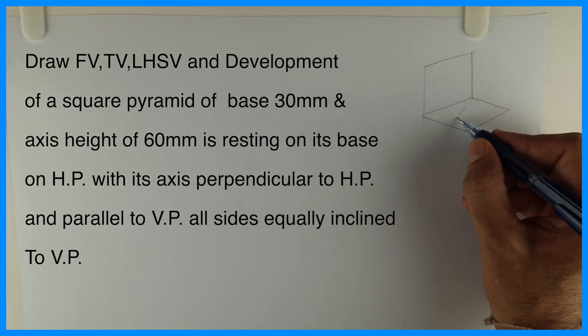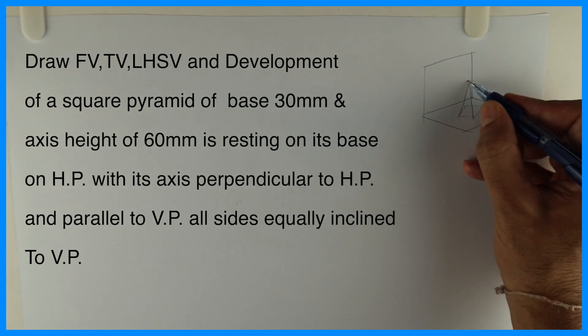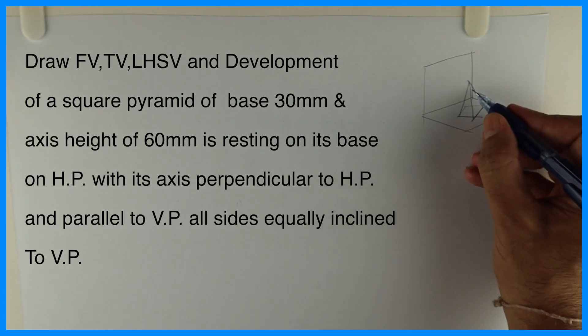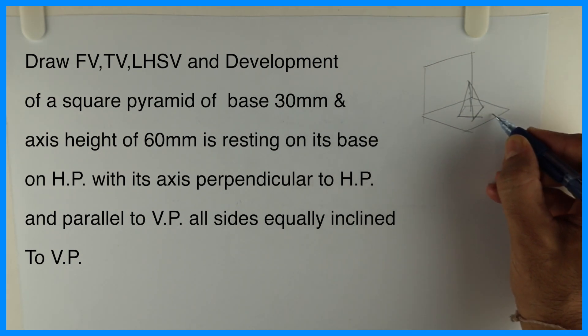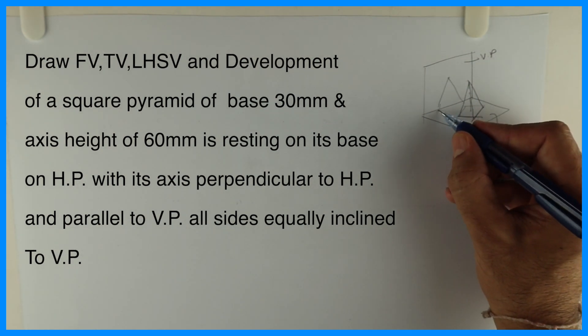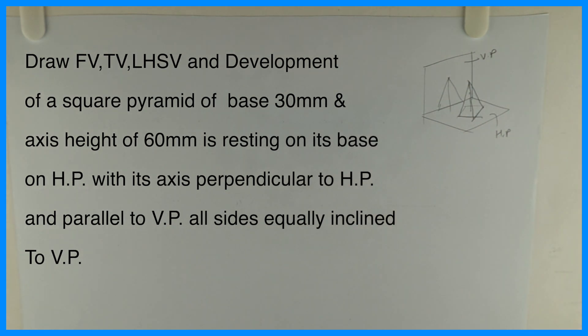Let's say in this, this is HP VP. This is all sides equally inclined. So this is how it will look. This is axis HP VP. This is how it will look in front view and top view you will see square.